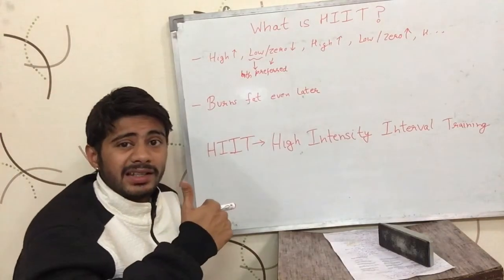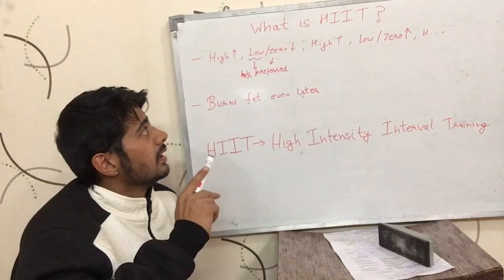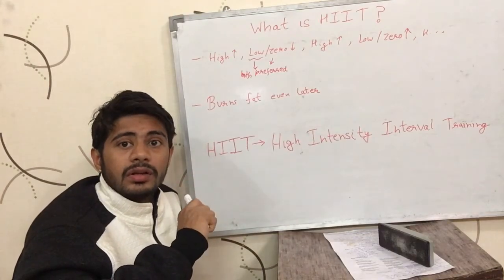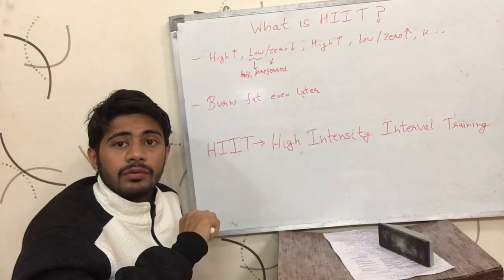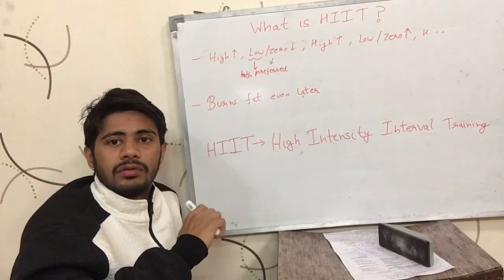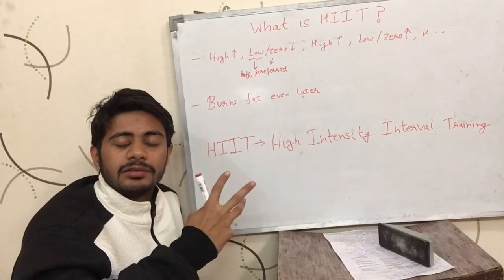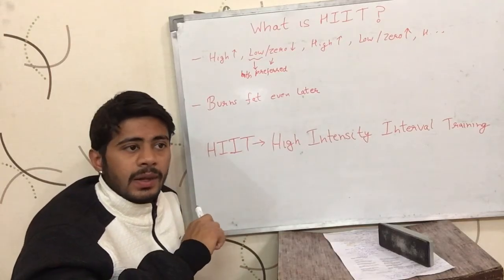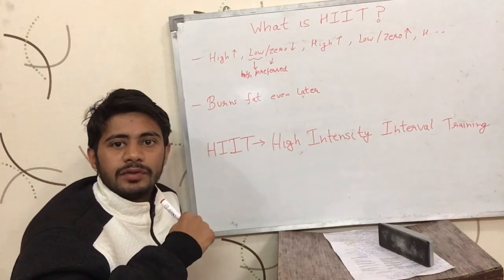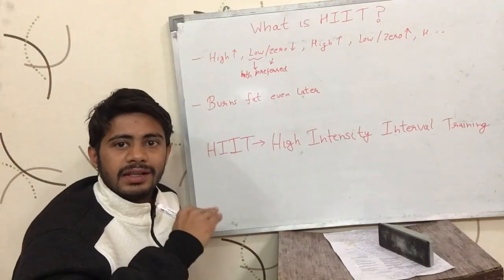Now, what intensity is I have mentioned in my previous video. I would like to mention that you cannot be doing exercises at high intensity for very long periods of time — your body doesn't allow it. For example, you cannot be running at your maximum speed for one hour. Your speed will come down, even if you think you are putting in maximum effort.